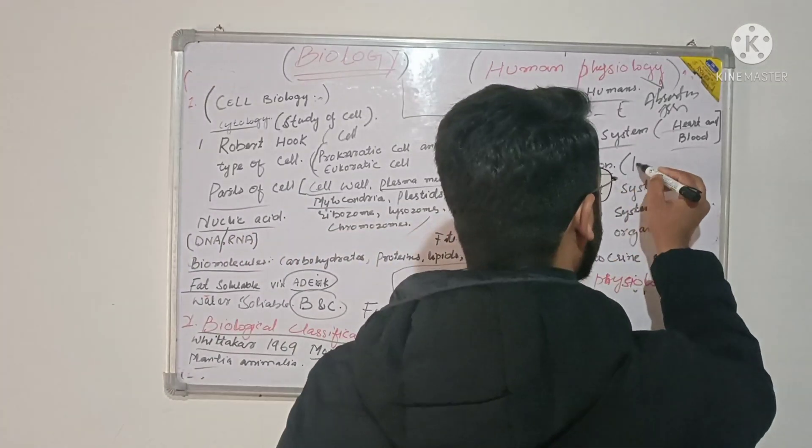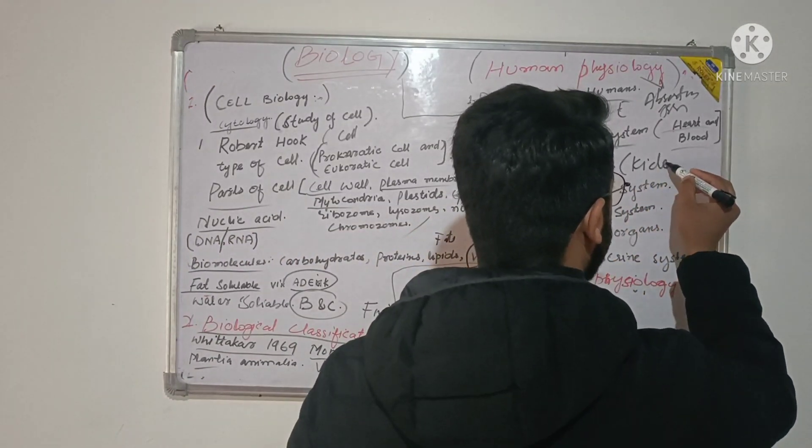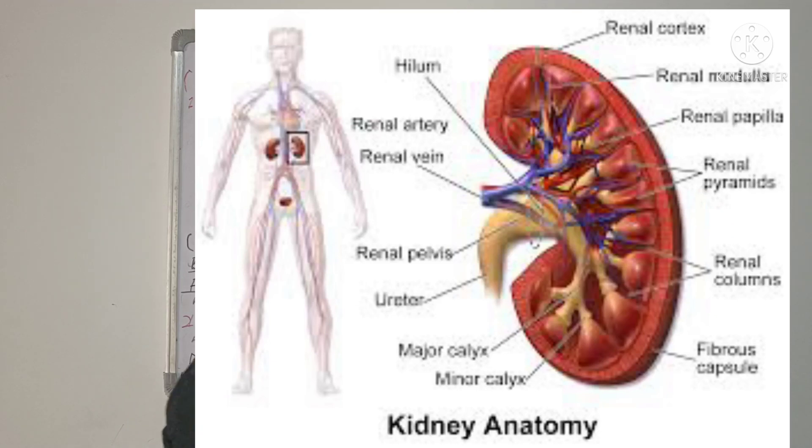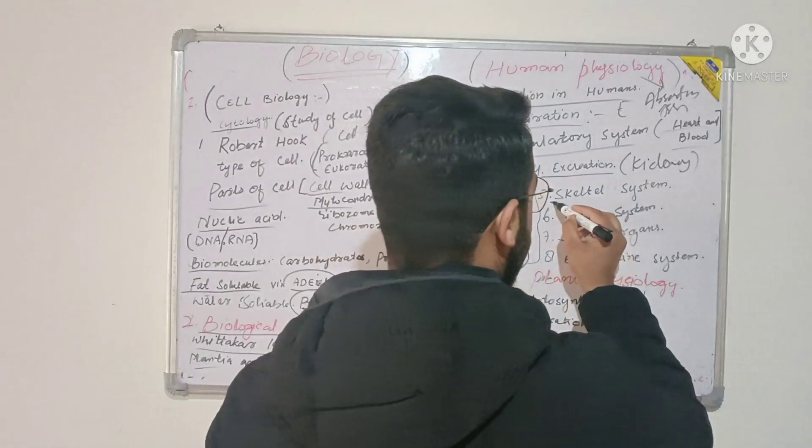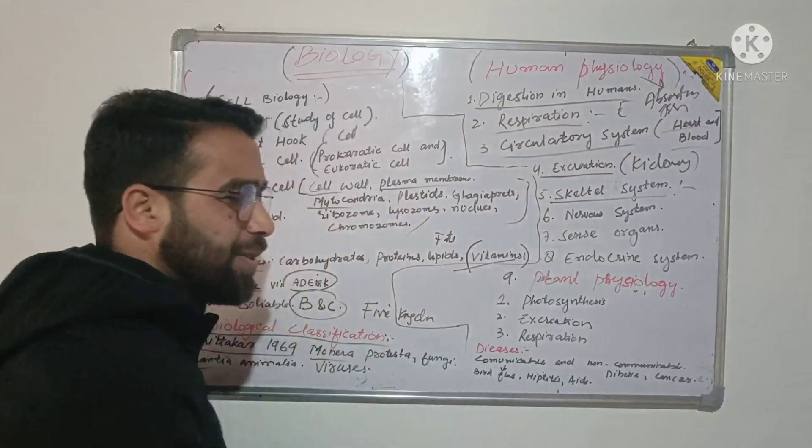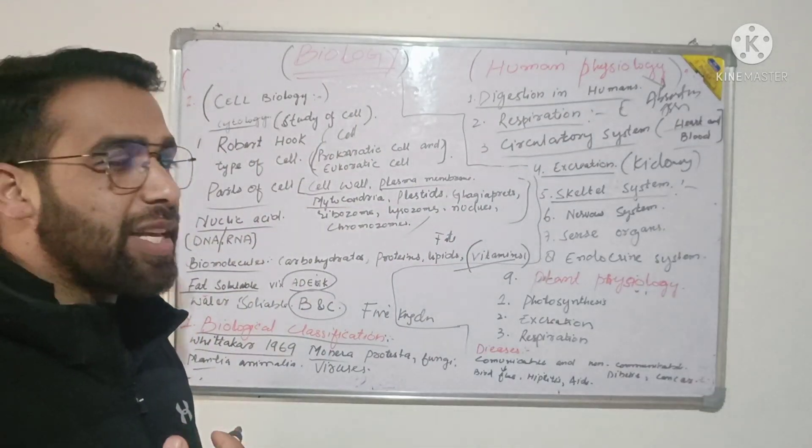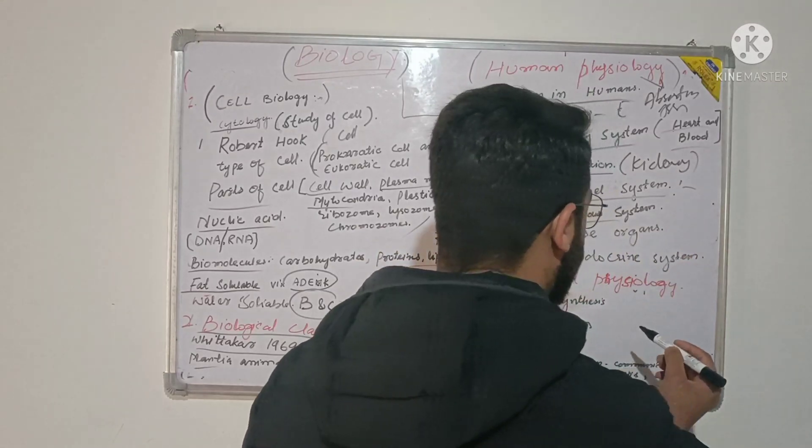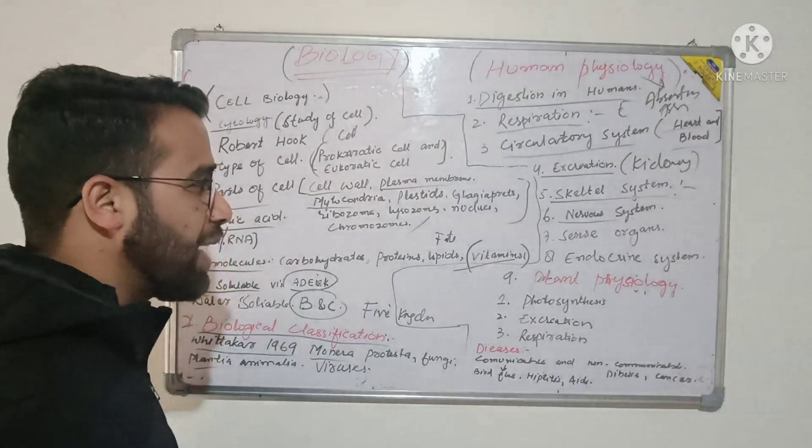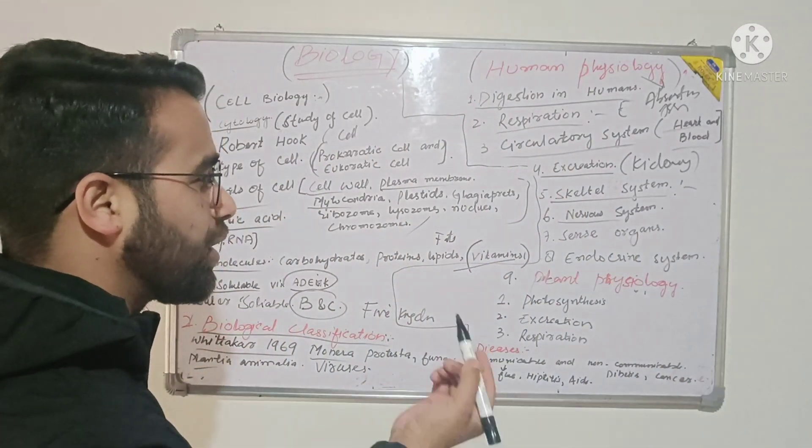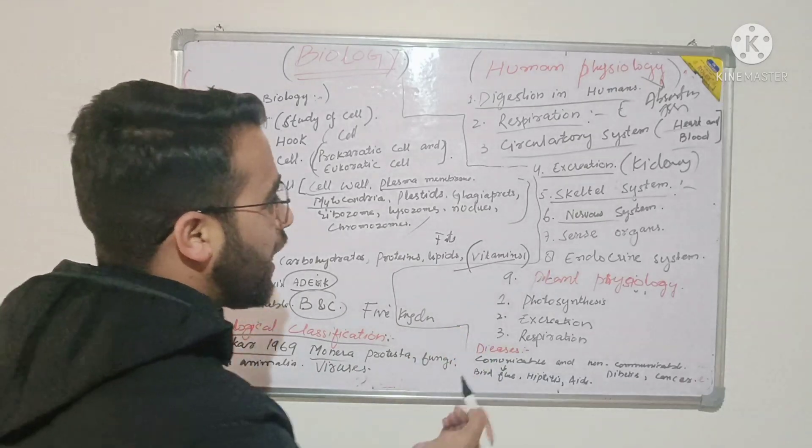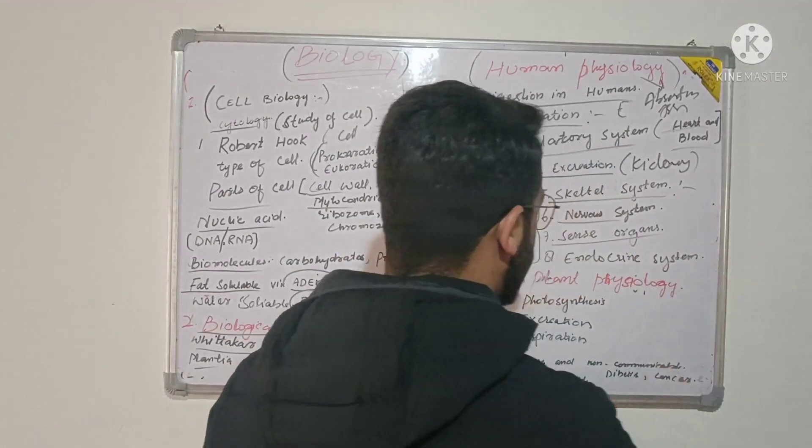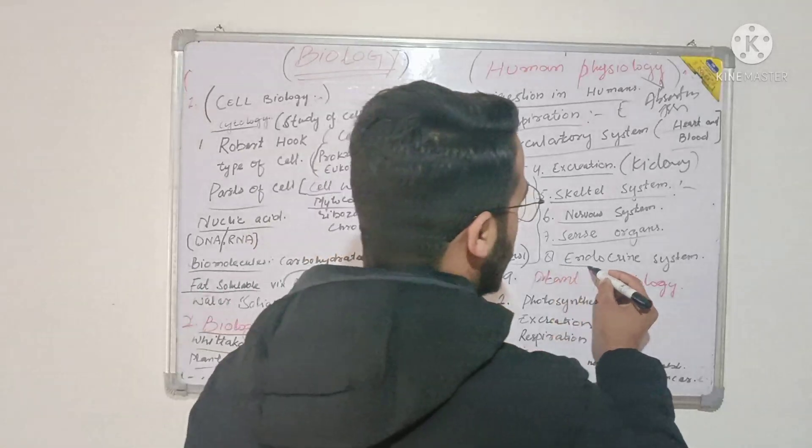Then excretion - here you would study about the kidney. Then you have the skeletal system with questions about the hardest bone in humans. Then the nervous system, the brain, the central nervous system. Then the sense organs.